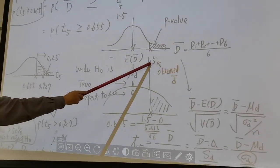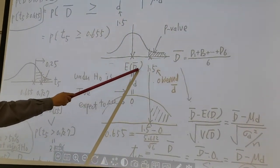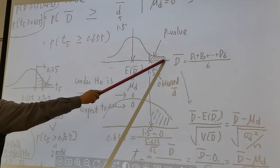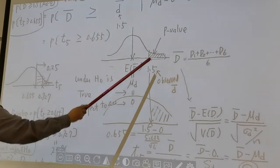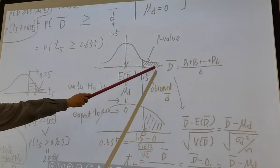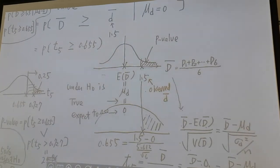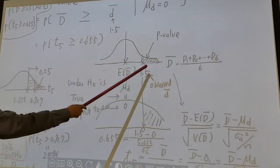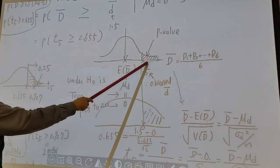You see, under H₀ is true, 1.5 should be close to zero. But if you find the evidence is 1.5 or even bigger, it looks like the summer session is really helpful. Therefore, there's a big difference. So this kind of data support H₀ is not true. Under H₀ is true, the data support Ha is true. It's what we call p-value.